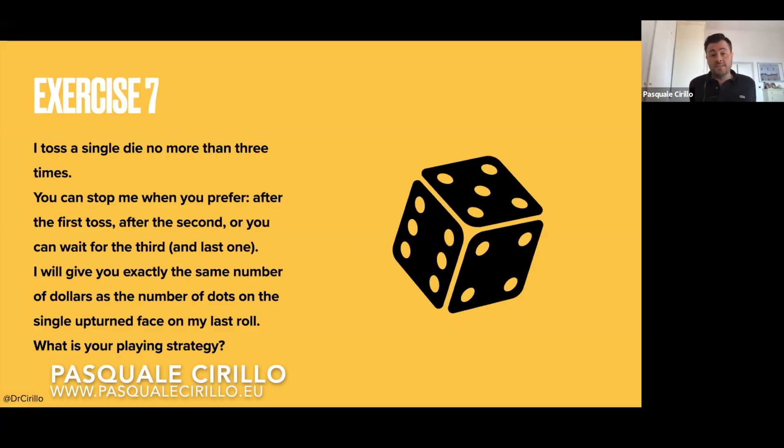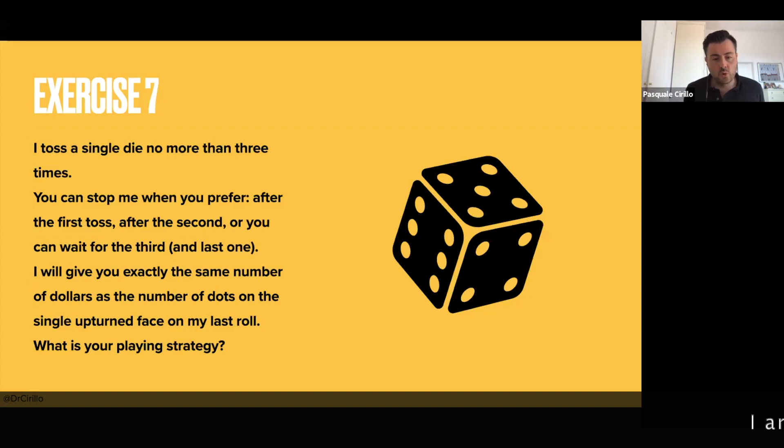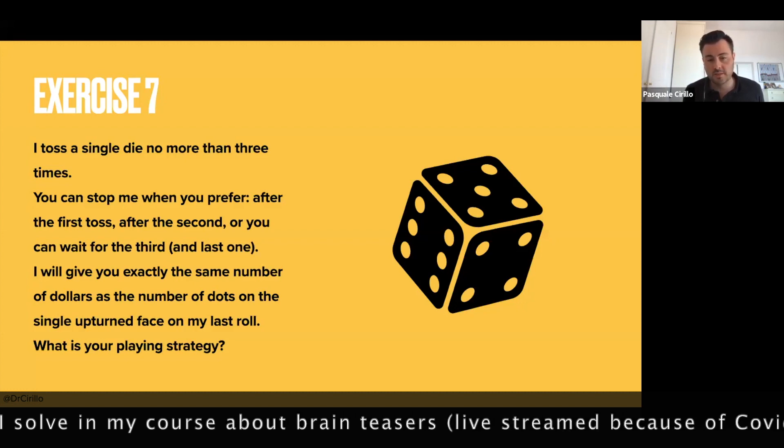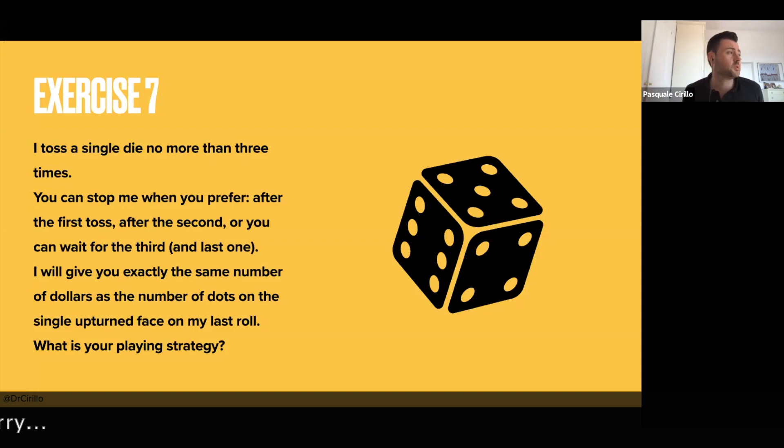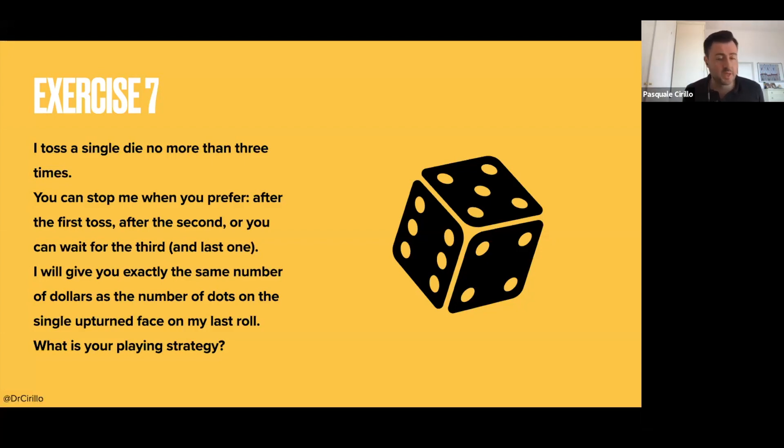This is a nice exercise, extremely nice, and I hope you were able to solve it because this exercise is nothing more than an American option in disguise. I think you saw American options, or you will see American options for sure, and you know that a way of playing with them is using trees, binomial trees or generalizations, and this is exactly the same type of exercise. So to solve this exercise, you have to use the same reasoning you would use for an American style option.